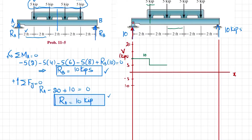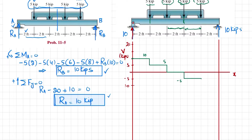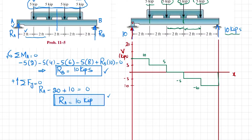From 2 to 4 feet the shear stays at 5 kips. At 4 feet, another 5-kip load brings the shear to 0. From 4 to 6 feet the shear is 0. At 6 feet, a 5-kip downward load takes the shear to −5 kips. That −5 kips is maintained to 8 feet, where a 5-kip load brings it to −10 kips. At 10 feet, the 10-kip reaction at B restores the shear to 0.